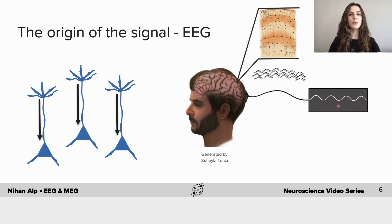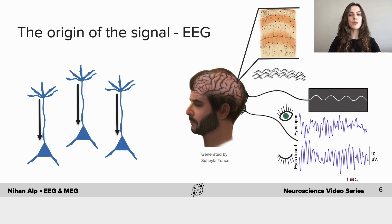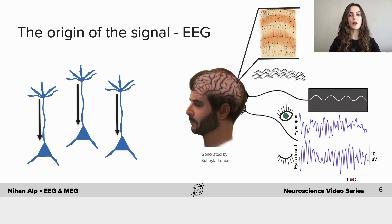One good example is alpha oscillations. Alpha has a frequency between 8 to 13 hertz, and when you close your eyes and relax, you will see alpha oscillations. This will disappear when your eyes are open or you are alerted by any mechanism — it could be thinking or calculating and so on. These oscillations are the major rhythms seen in normal relaxed adults.